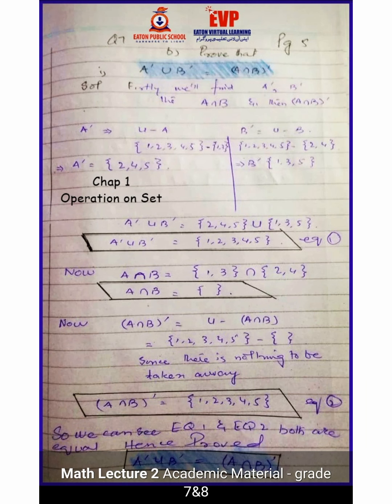Here we have to prove: A complement union B complement is equal to (A intersection B) whole complement — this is De Morgan's Law. We will solve it step by step. First, we find A complement using the universal set, then we find B complement, and finally combine them. After solving both sides, we can see that the left-hand side and right-hand side are equal, and hence the statement is proved.